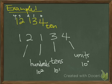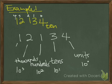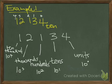The value of 2 is 10 to the power 3, which are thousands. The value of 1 is 10 to the power 4, which are ten-thousands. That's why we pronounce it as 12134.